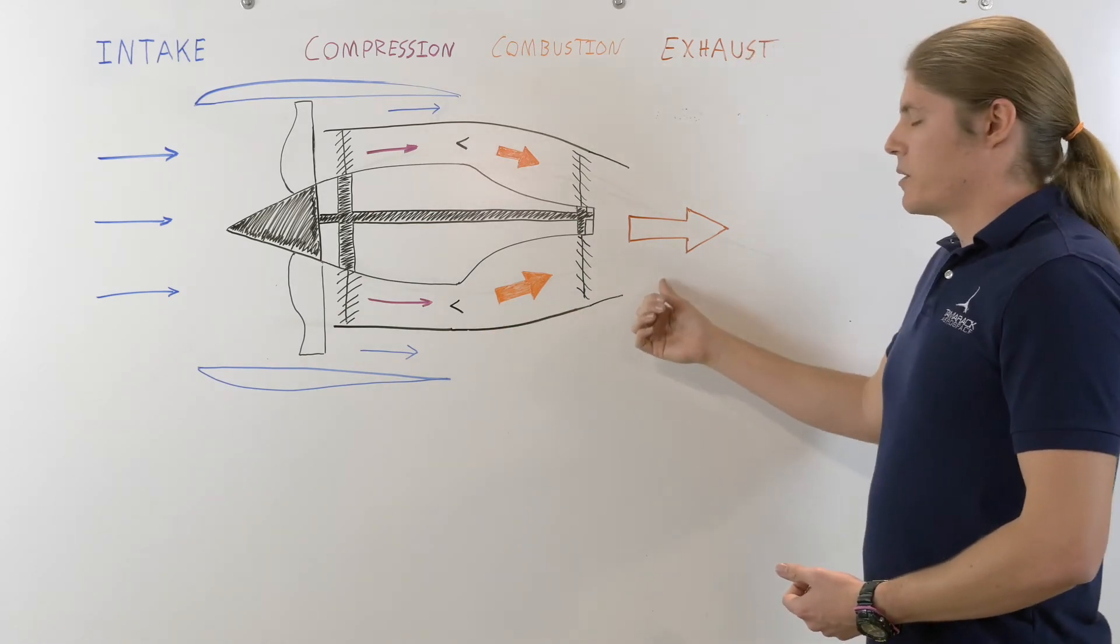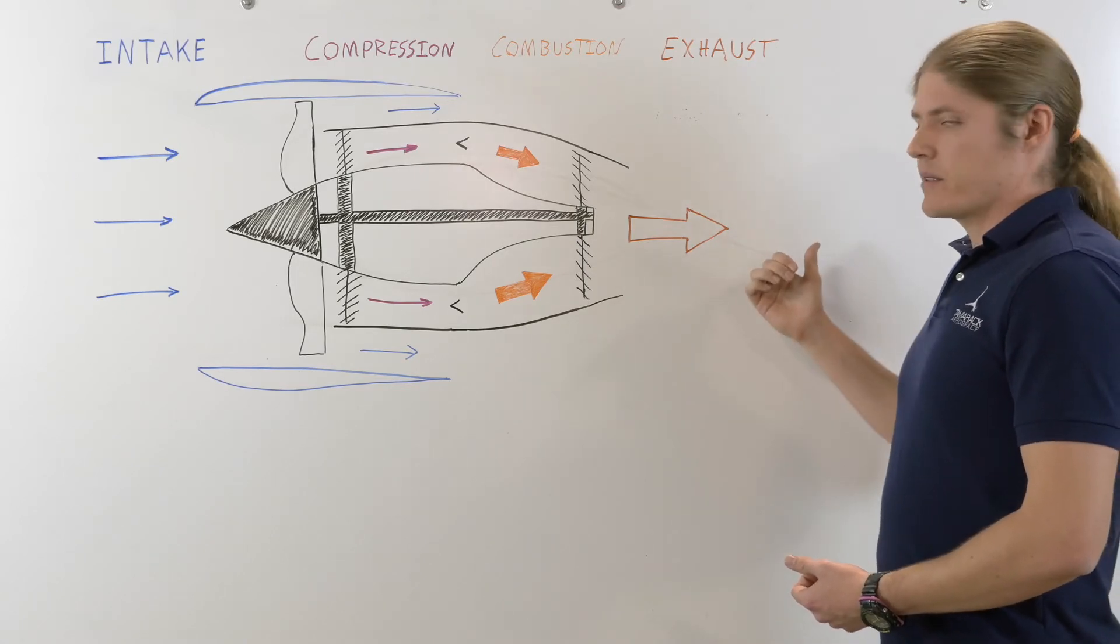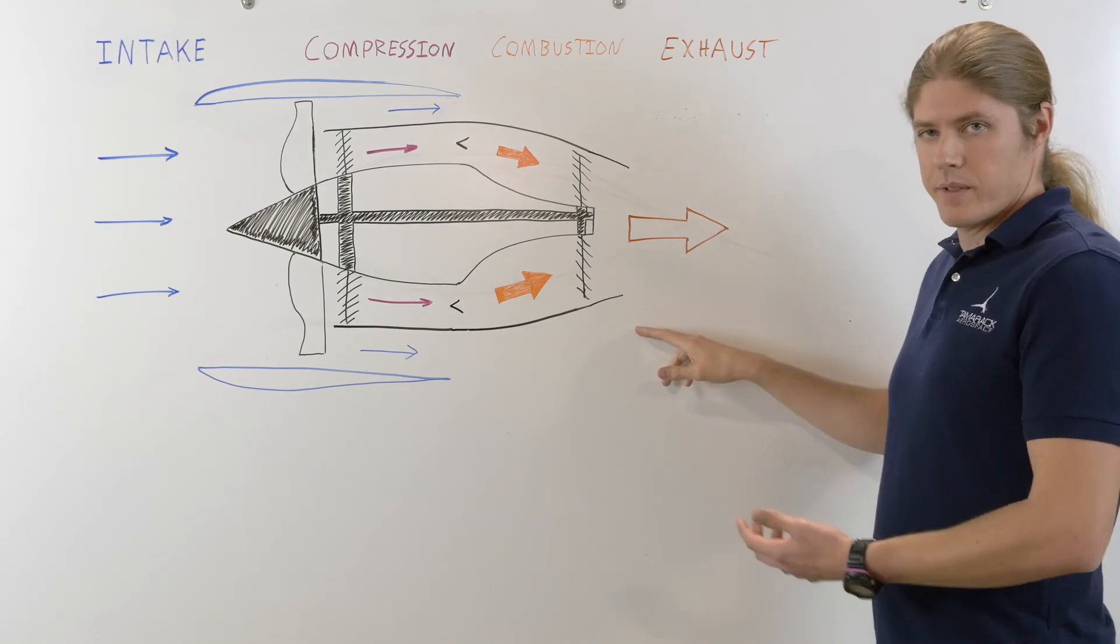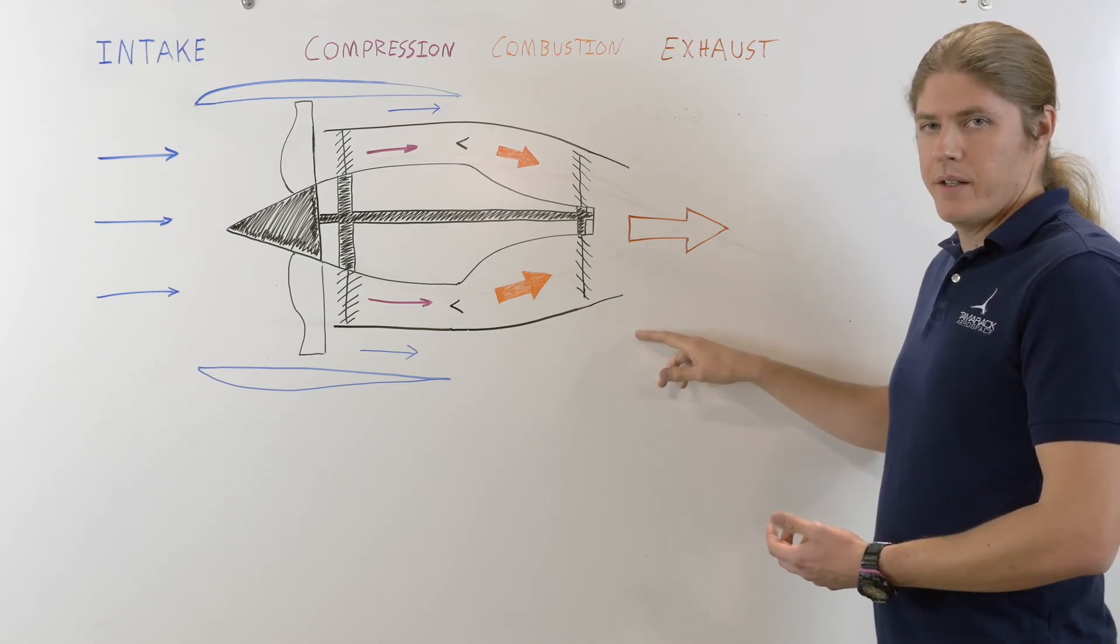After it passes through the turbine, then it exits the back of the jet, and it remixes with the bypass flow, which has been accelerated by the bypass fan, to create your thrust.